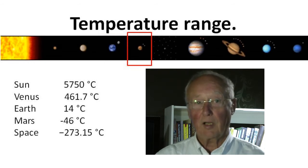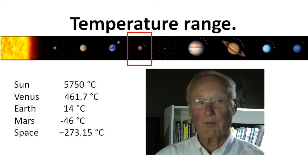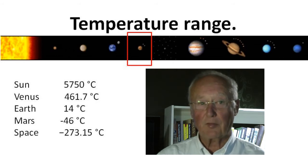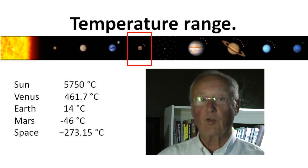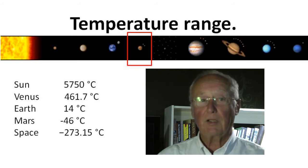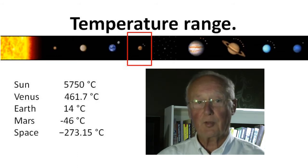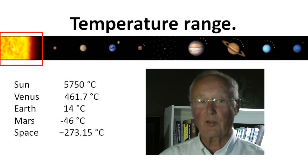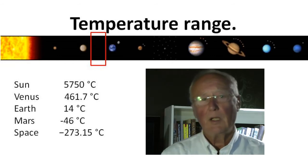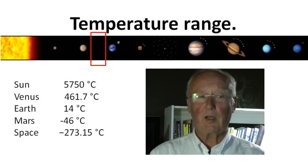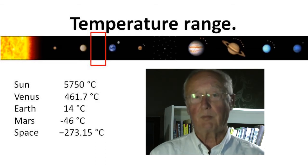Mars has a very light atmosphere, and although it is 95% CO2, it has very low gravity, which results in a thin atmosphere and therefore it cannot retain heat. Mars has an average temperature of minus 46 degrees, and it goes down to minus 73°C at night, at which temperature water is frozen solid. To complete the picture, the sun's temperature is 5,750 degrees centigrade and space is minus 273.15, which is the theoretical minimum temperature.